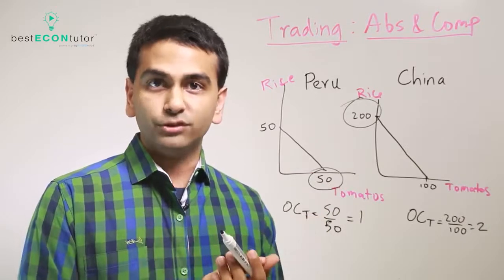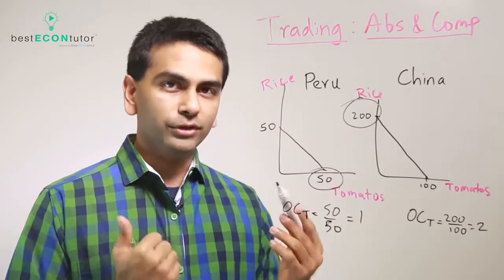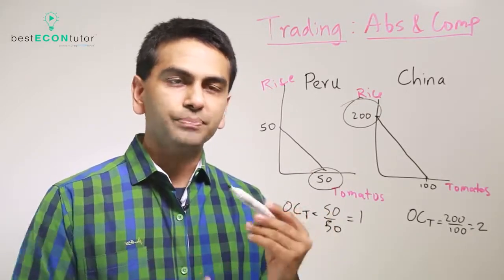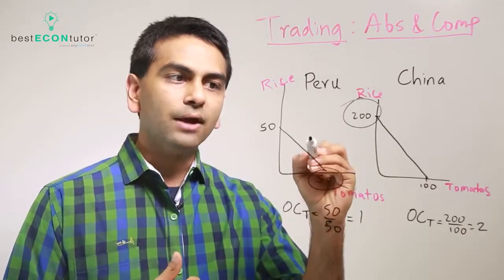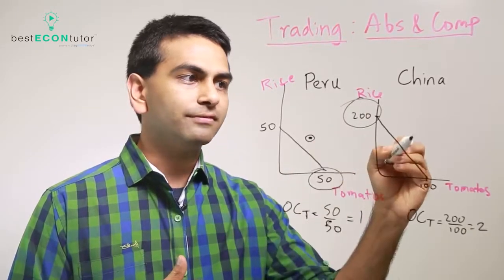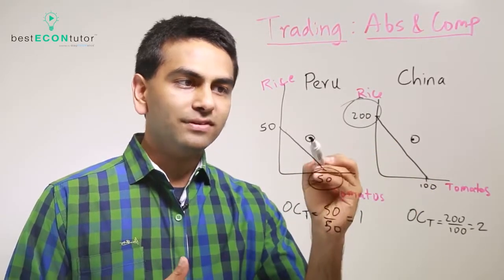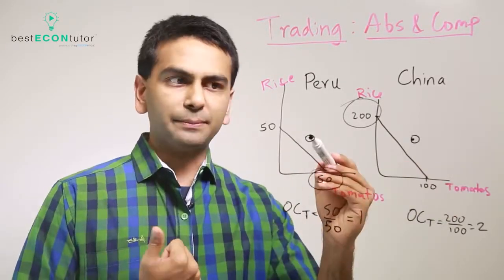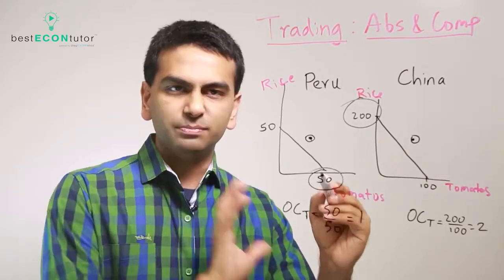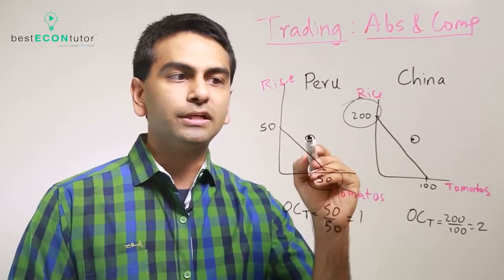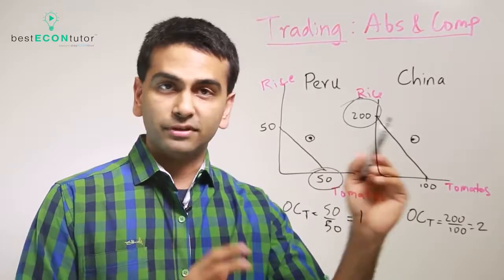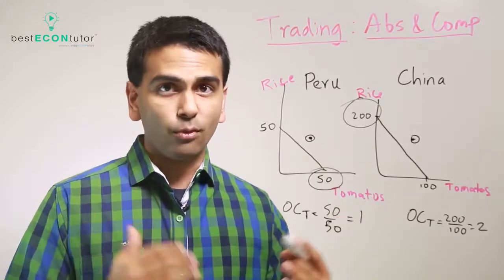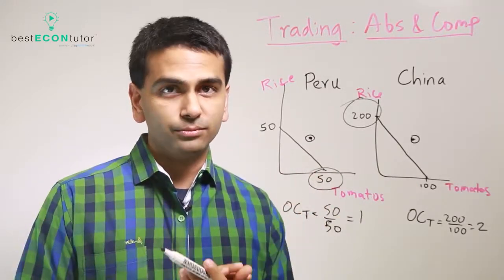And that's why if you trade based on comparative advantage, what you can do is you can then after trading consume a point outside of your original PPF. So a previously impossible point for both countries is now attainable. You can't really produce that point directly, but after specializing and trading you can consume a point for both countries outside of your PPF, and that's why there are always gains from trade.